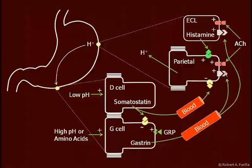Gastrin in turn causes the secretion of more acid and histamine, which enhances acid secretion. So when you eat a meal and the pH rises, and we begin to see proteins broken down into amino acids, the high pH and amino acids trigger gastrin, which then triggers more hydrogen secretion to try to bring the pH back down. Under low pH conditions, we find D cells secreting somatostatin.